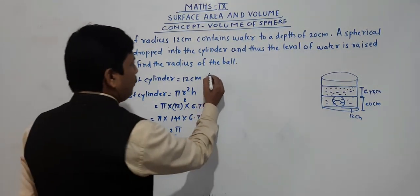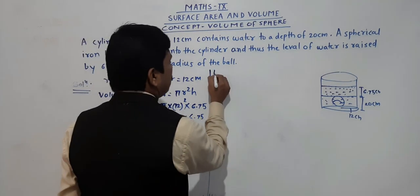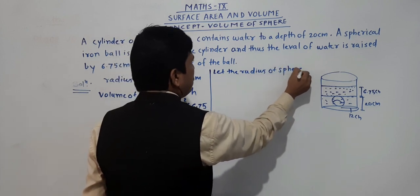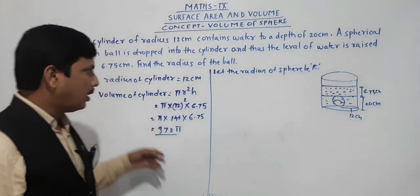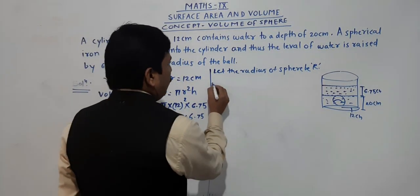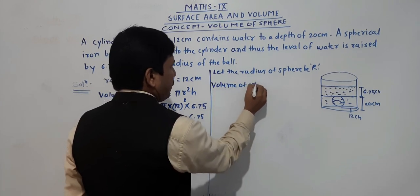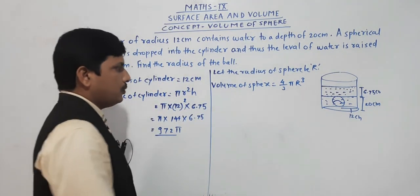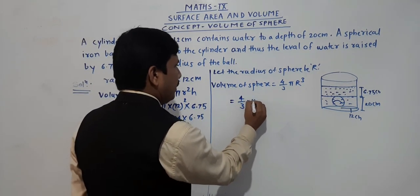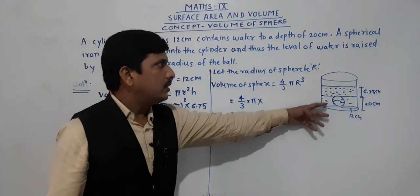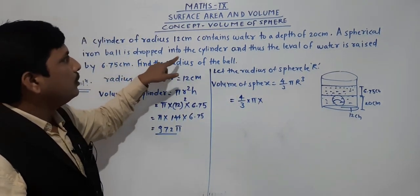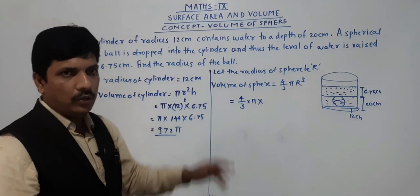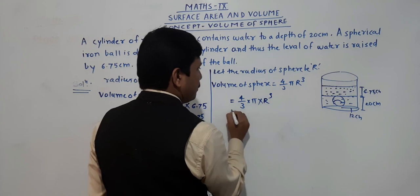So 972π is the volume of the cylinder whose height is 6.75. Now we will find out the volume of the sphere. Let the radius of the sphere be R (capital R, since small r was used for the cylinder). Volume of sphere equals (4/3)πR³. Here 4/3 × π we will keep as is, and R³ remains since that is what we need to find. This is the volume of the sphere.